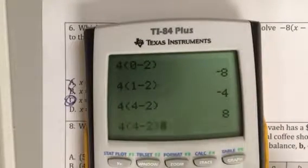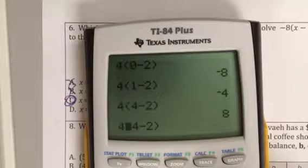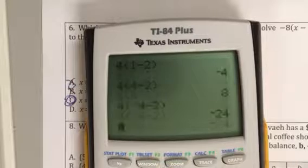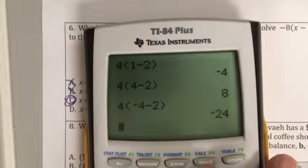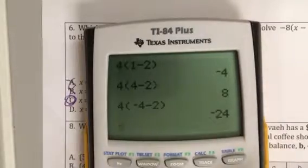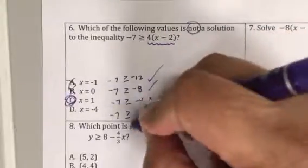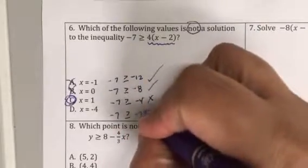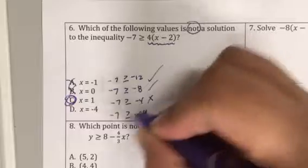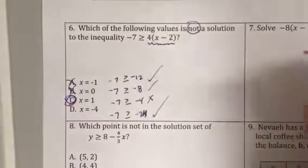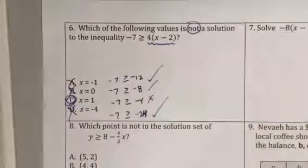I forgot the negative 4. Which is why you check your answer, guys. People mess up. I tell you all that all the time. So that should actually be -24. Is -4 greater than or equal to -24? That is a true statement. That's not what we're looking for.